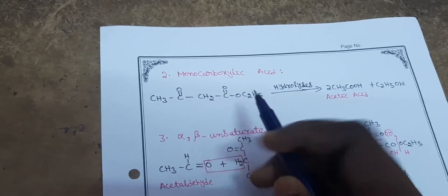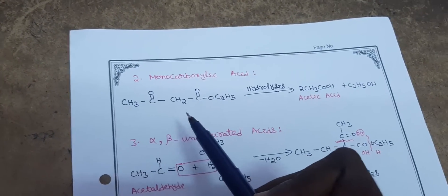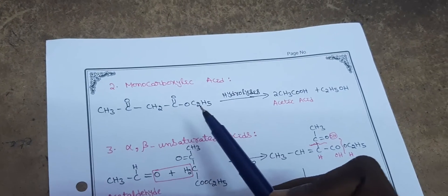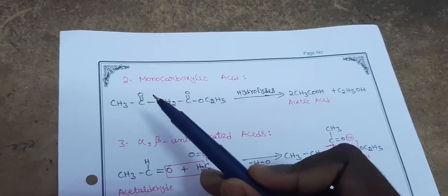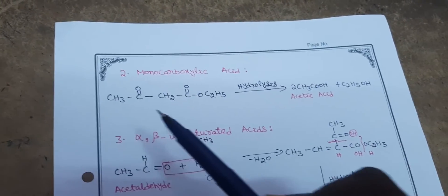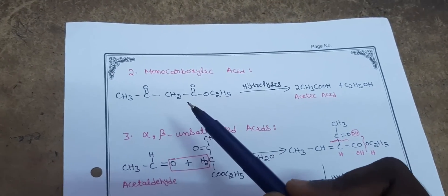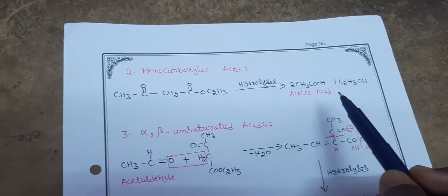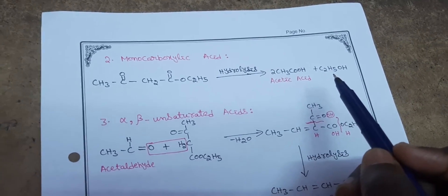Next: monocarboxylic acid. The keto form of acetoacetic ester undergoes hydrolysis; ester on hydrolysis forms acid. Bond cleavage occurs at particular positions, giving two moles of acetic acid (CH₃COOH) and a single mole of ethyl alcohol.